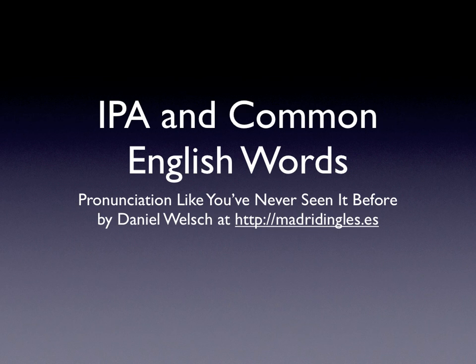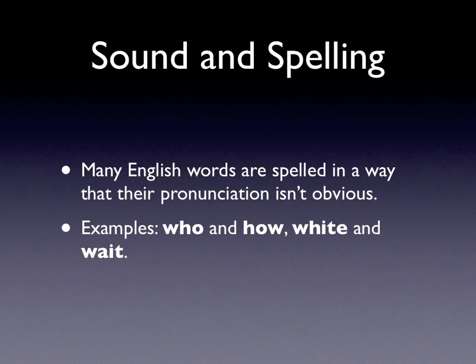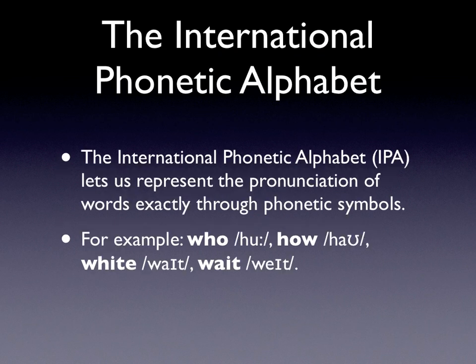I'm going to give you lots of examples so you can learn it. First off, sound and spelling. A lot of English words are spelled in a way that their pronunciation isn't obvious — we have to listen to them as well as spell them. Examples are: who, how, white, and wait. The sounds that we hear are different than the sounds that we see on paper. The International Phonetic Alphabet solves this problem. It lets us represent the pronunciation of words exactly through phonetic symbols. The examples from earlier are now represented using their respective symbols.